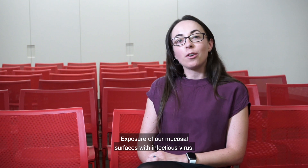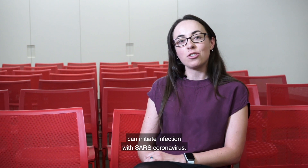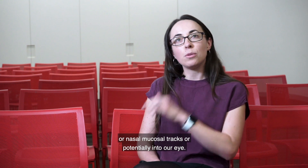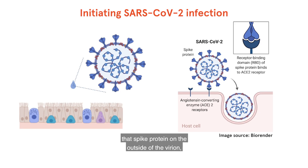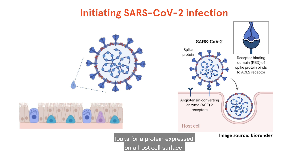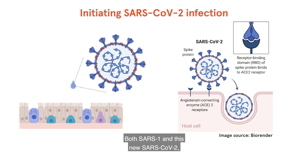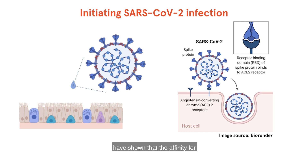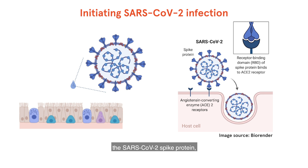Exposure of our mucosal surfaces with infectious virus can initiate infection with SARS coronavirus — that is the virus getting into our oral or nasal mucosal tracts, or potentially into our eye. When this happens, that spike protein on the outside of the virion looks for a protein expressed on a host cell surface, known as the angiotensin converting enzyme 2, or ACE2. Both SARS-1 and this new SARS coronavirus 2 utilise ACE2 as an entry receptor. Computer modelling and biophysical experiments have shown that the affinity of the SARS coronavirus 2 spike protein is actually higher for the ACE2 protein than it was for the original SARS virus.